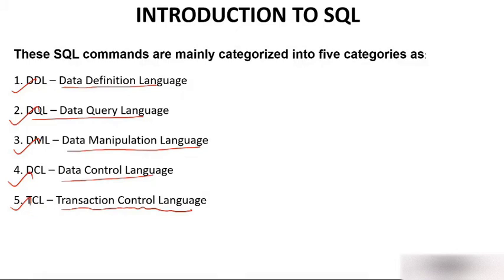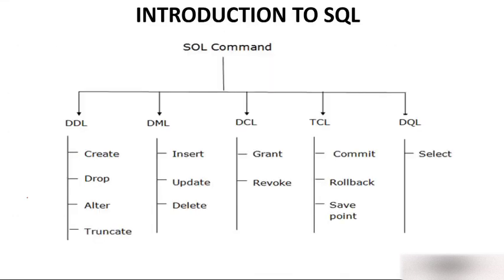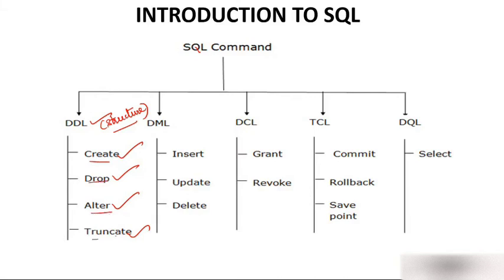Let's see each category and what different commands fall under them. DDL — Data Definition Language — is used when we work on the structure of a table: we can create a table, drop a table, alter values, and truncate values. The DDL commands are: CREATE, DROP, ALTER, and TRUNCATE. DML — Data Manipulation Language — is used when you manipulate existing data by inserting, updating, or deleting. The DML commands are INSERT, UPDATE, and DELETE.